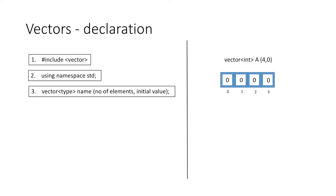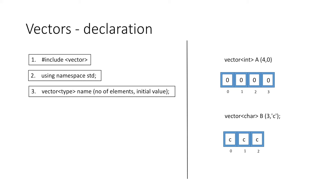Now if you want to make a vector which would contain character elements, we can simply change the type to char. Like in this case, we have created a vector 'b' and we have defined the number of elements as 3 and the initial value as 'c'. So our vector would look something like this. Now let's take our vector 'a' and see how we can input values in it, and we can do this in a similar way we do with arrays.